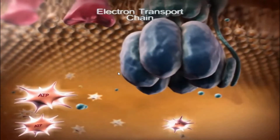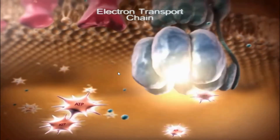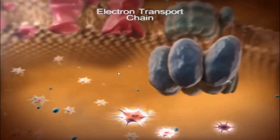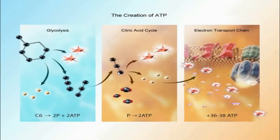The three steps of cellular respiration can produce up to 38 ATP molecules from one glucose molecule.